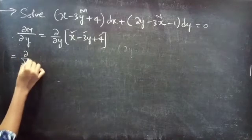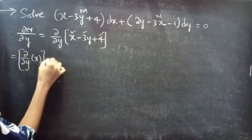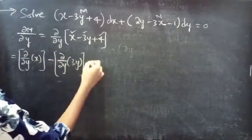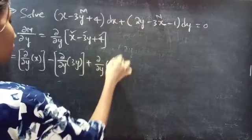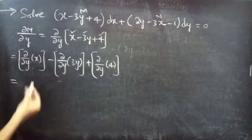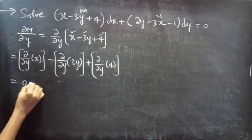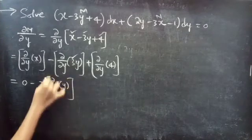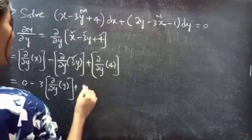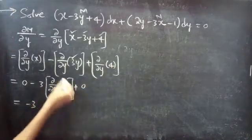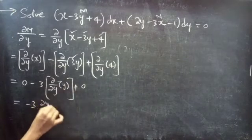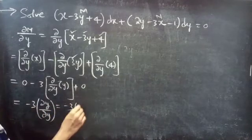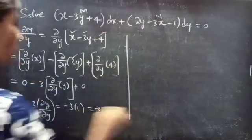This is equal to the partial derivative of x minus the partial derivative of 3y plus the partial derivative of 4. The derivative of a constant with respect to y is 0, minus 3 times the partial derivative of y with respect to y, plus the derivative of a constant with respect to y is 0. This equals minus 3 times 1, which equals minus 3.